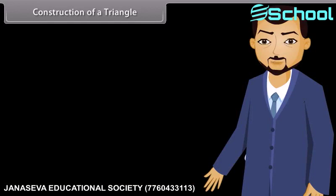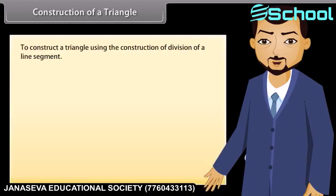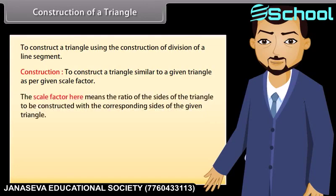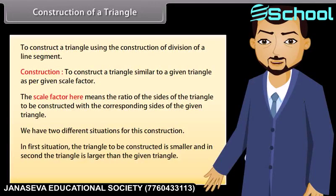We will now learn to construct a triangle using the construction of division of a line segment. To construct a triangle similar to a given triangle as per a given scale factor — the scale factor here means the ratio of the sides of the triangle to be constructed with the corresponding sides of the given triangle. We have two different situations: the triangle to be constructed is smaller, or larger than the given triangle. We will solve some examples to understand this.